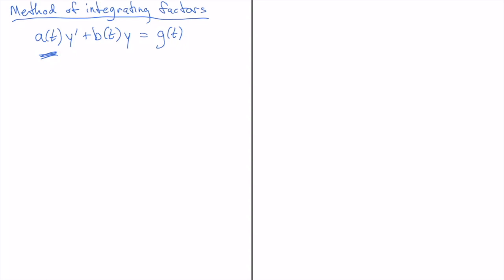So the first step in carrying out the method of integrating factors is to divide through by the a of t function. So if a of t is ever equal to zero for some t then the solution that we're going to write down may have some problems but let's just assume it's at least non-zero initially and so this method will work at least for a little while.